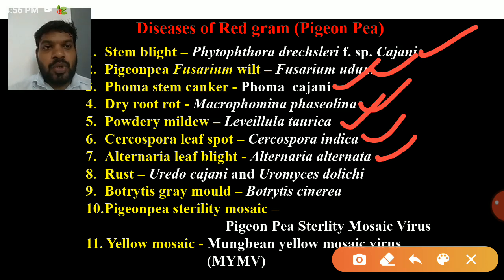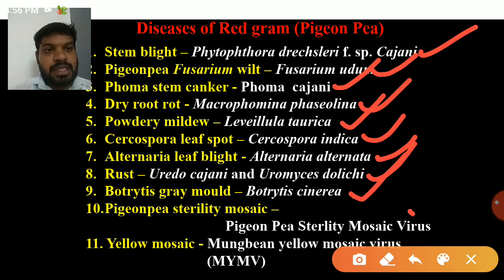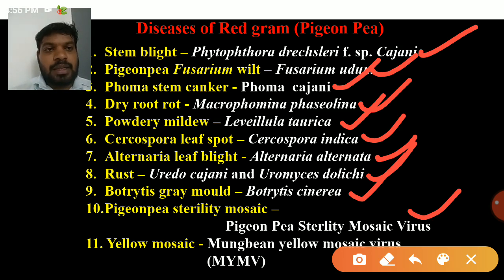Then rust caused by Uredo cajani, gray mold caused by Botrytis cinerea, PGNP sterility mosaic which is one of the important viral diseases caused by PGNP sterility mosaic virus, and then yellow mosaic.